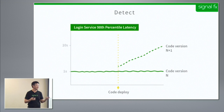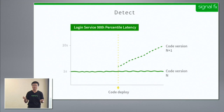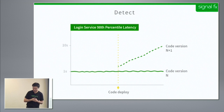The service owner can then act by adding more capacity. For stateless services, we actually have triggers set up to automatically add more nodes into the tier.